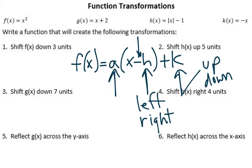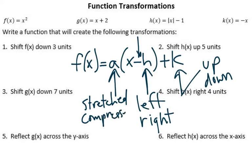The A did quite a few things. It stretched it, compressed it. Stretched makes it skinnier, compressed makes it wider. It also could reflect it across the x-axis. And if it reflected it across the y, it would have to be inside there.